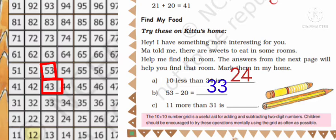Then from 53 you will reach to 43, then 33. So 53 minus 20 is 33. Now 11 more than 31 means 31 plus 11. First we will jump 10 steps forward, that is one step up, that is 31 plus 10 gives you 41, and plus 1 will give you 42.